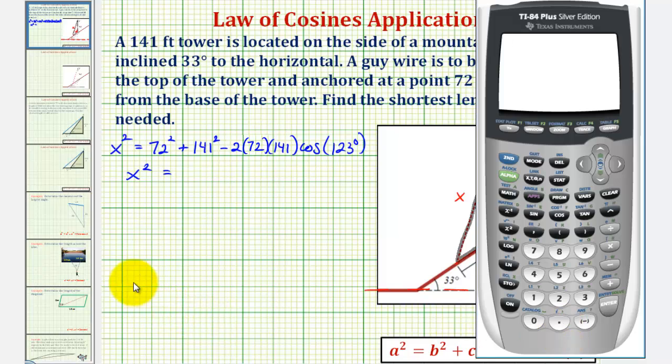Let's first verify we are in degree mode, so we'll press the mode key. Notice how degree is highlighted, so go back to the home screen, and we'll enter 72 squared plus 141 squared minus 2 times 72 times 141 times cosine of the value. Cosine, 123 degrees, enter. So here's the value of x squared, 36,123.35.